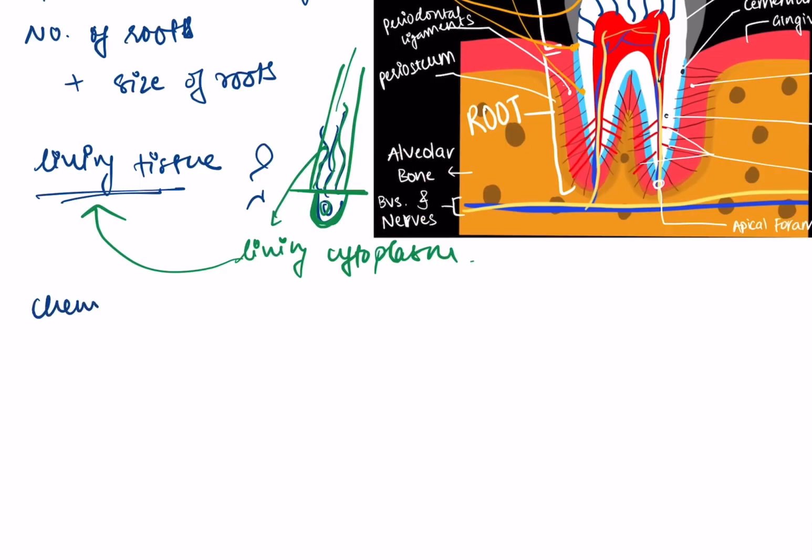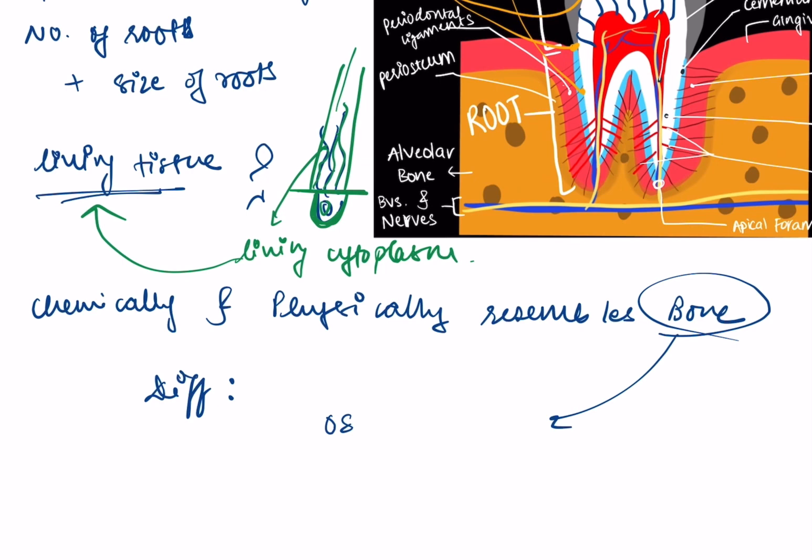And it chemically and physically resembles the bone. But there is a difference. In bone we see that the osteoblasts lie on the surface of the bone. Some osteoblasts get trapped inside the surface of the bone and these are called the osteocytes. These are the osteoblasts on the surface of the bone.